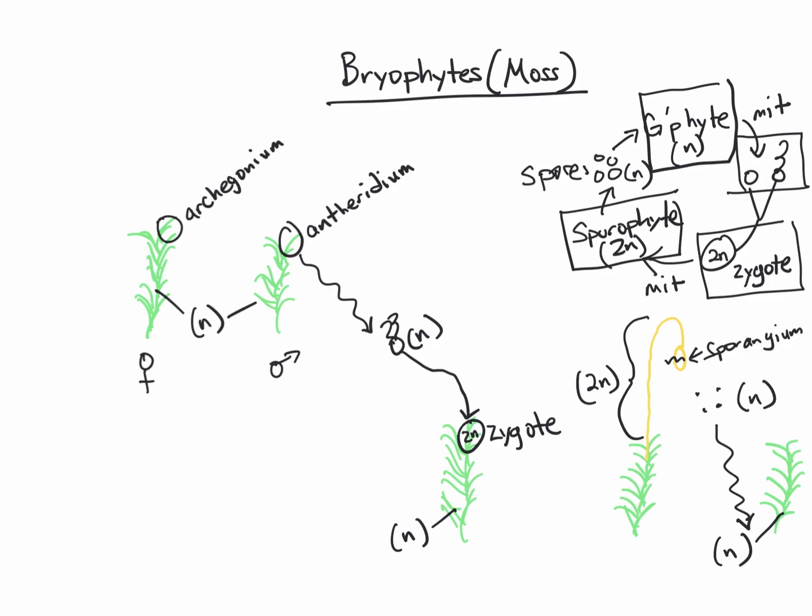By applying the alternation of generations life cycle to something like moss, we get a better idea of how it works. I hope that helps — please don't hesitate to ask questions if you have any. I'll see you in lecture.